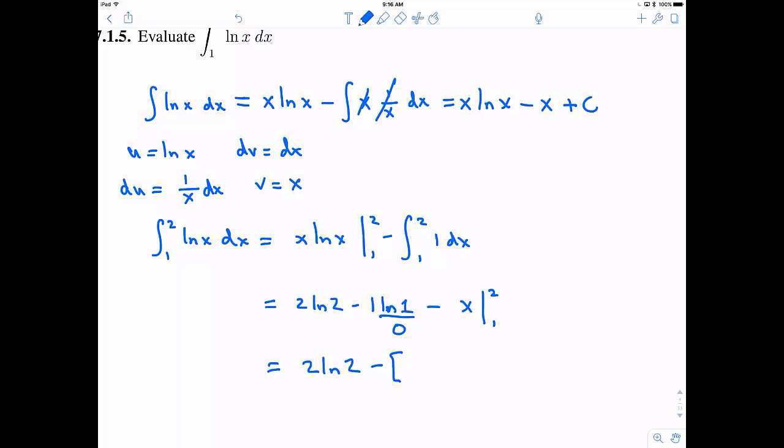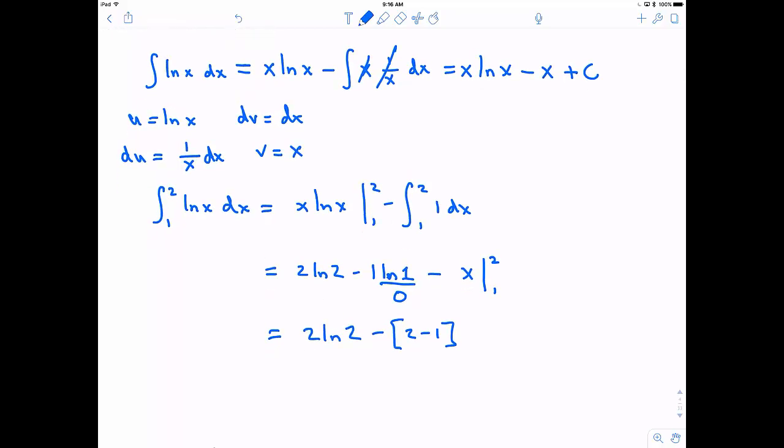Minus and when I integrate 1 I get x and I evaluate from 1 to 2. So I get 2 natural log of 2 minus 2 minus 1. So 2 minus 1 is 1. So my final answer is just going to be 2 natural log of 2 minus 1. Alright and that is all there is to it.